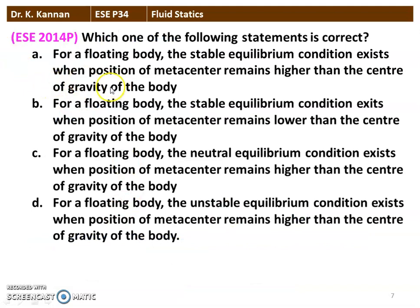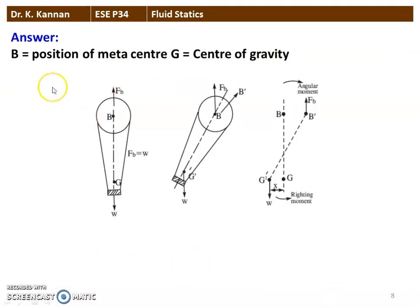The next question from the 2014 question paper: which one of the following statements is correct? Option A: for a floating body, stable equilibrium exists when the metacenter is higher than the center of gravity. Option B: stable equilibrium when metacenter is lower than center of gravity. Option C: neutral equilibrium when metacenter is higher than center of gravity. Option D: unstable equilibrium when metacenter is higher than center of gravity. The answer is option A — for a floating body, stable equilibrium exists when the metacenter remains higher than the center of gravity.